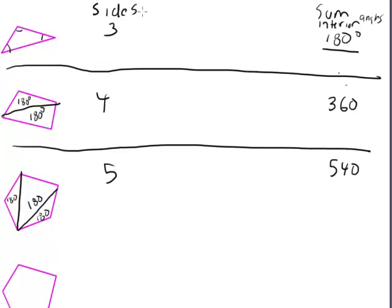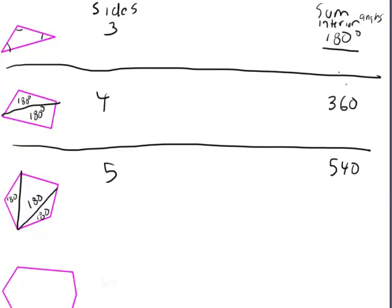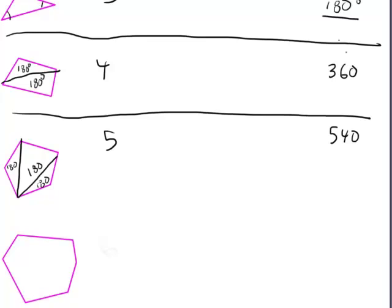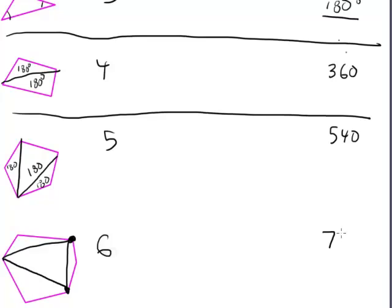Let's do one more with a hexagon — one, two, three, four, five, six sides — and see what relationship exists between the number of sides and the sum of the interior angles. Here's one triangle, here's a second, here's a third, and then there's a fourth one on the inside. So we've got four times 180, or 720 degrees.